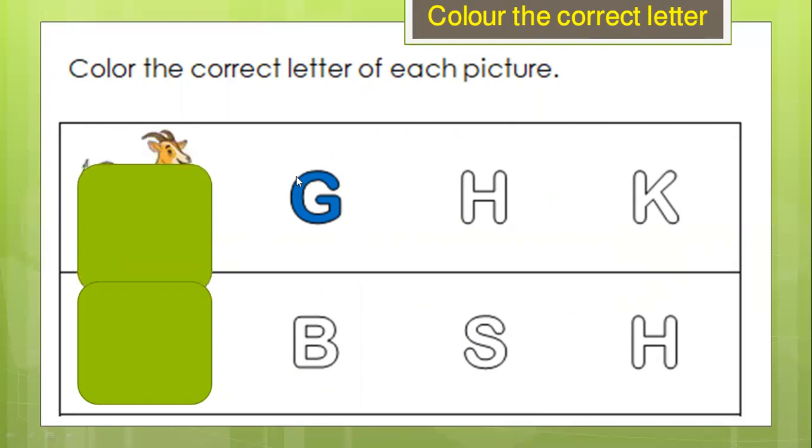For example, the first one is a goat. Goat starts with the letter G. So we color the letter G for goat. Color it G for goat.